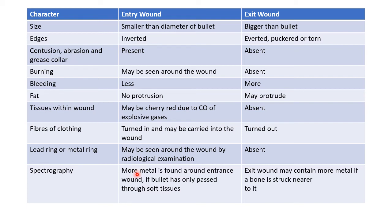Regarding spectrography findings: in an entry wound, more metal is found around it if the bullet has only passed through soft tissues. In the case of an exit wound, it may contain more metal if a bone is struck near to it. So remember — in an entry wound involving soft tissues there will be more metal, whereas in an exit wound if bone is involved there will be more metal.